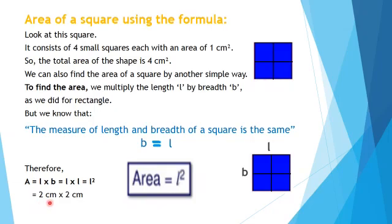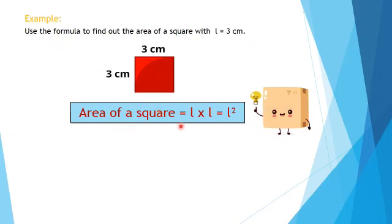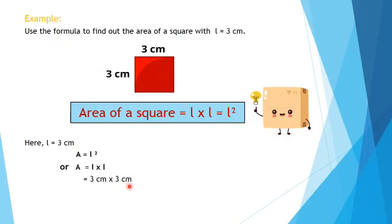Here we have a length of 2 centimeters. Its area can be calculated by multiplying 2 cm × 2 cm, so it equals 4 centimeters square. Example: use the formula to find the area of a square whose length is 3 centimeters. The formula is L² or L × L. Therefore, it will be 3 cm × 3 cm, which equals 9 centimeters square. The area of the given square is 9 centimeters square.